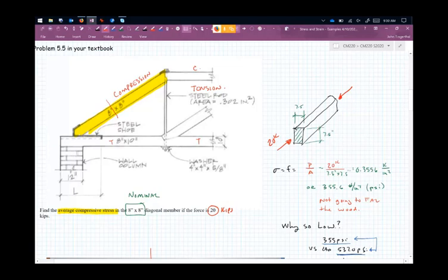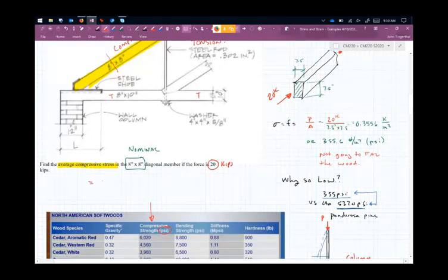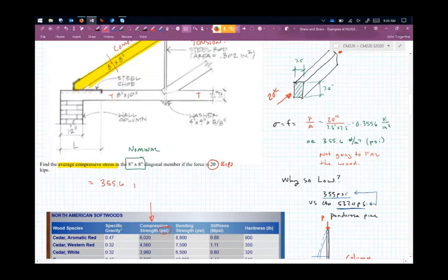Okay, so that is one reason why we would have such a low stress. So that's the first question, and our answer here was 355.6 PSI.